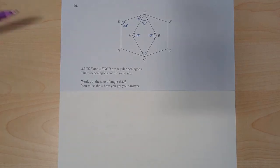Question 20 says ABCD and AFGCH are regular pentagons. The two pentagons are the same size and he wants me to work out the size of angle EH. You must show how you get your answer.